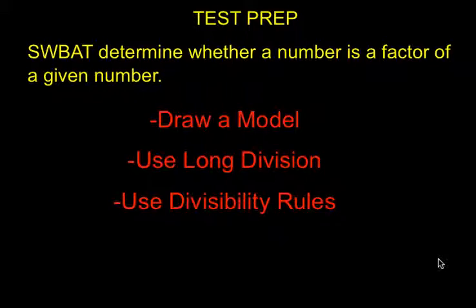There are three ways that we learned how to do that. You can draw a model - if you have a rectangular array, then you know a number is divisible by that number of rows or by the number of columns. You can also use long division. If you can divide a number by another number, then that number is a factor. And finally, you can use divisibility rules. As you get better at memorizing and utilizing your divisibility rules, this is going to be your go-to strategy if you want to be quick and efficient.